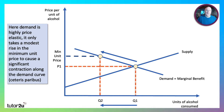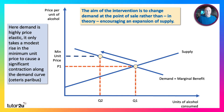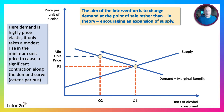If you get a question on minimum unit prices — it doesn't have to be for alcohol, it could be for something else — think about the significance of the coefficient of price elasticity of demand. The key point with this particular intervention is that the aim is to change demand at the point of sale, rather than encouraging drink manufacturers to expand supply. In theory, retailers will make more money per unit sold, but the aim is not to expand supply — the aim is to cut back on demand.